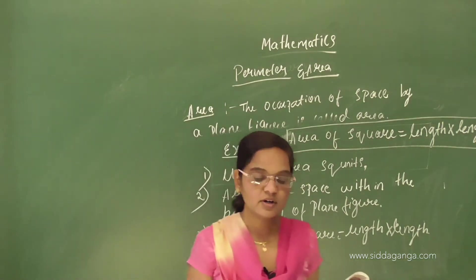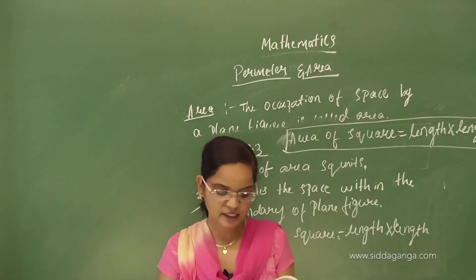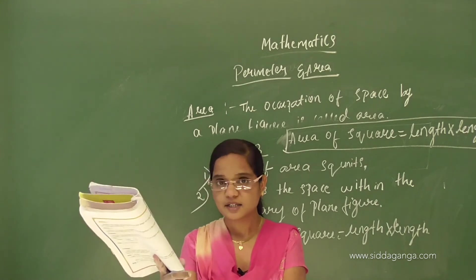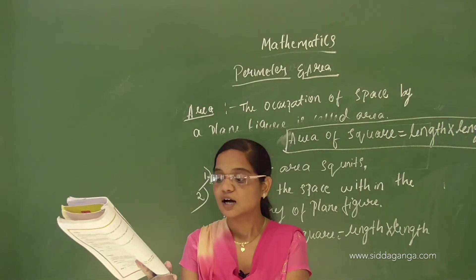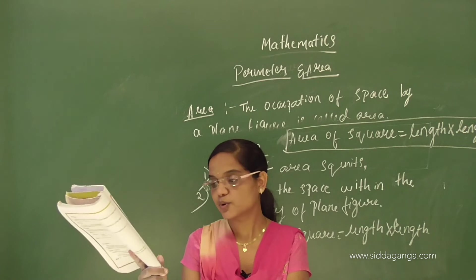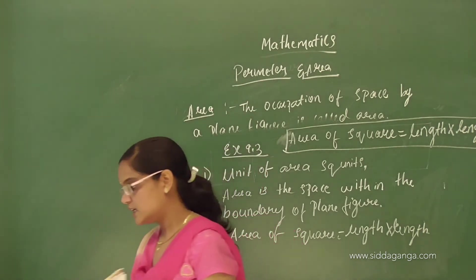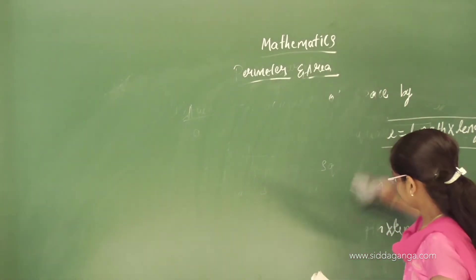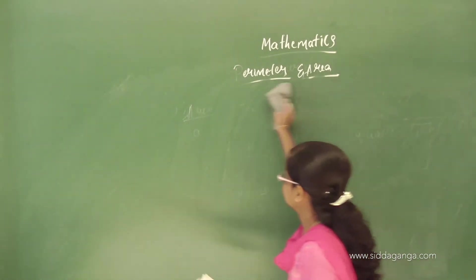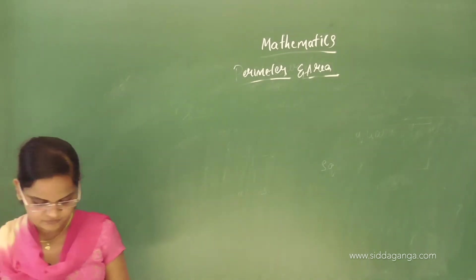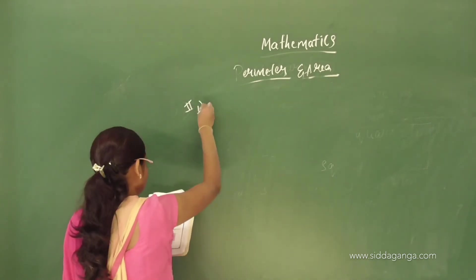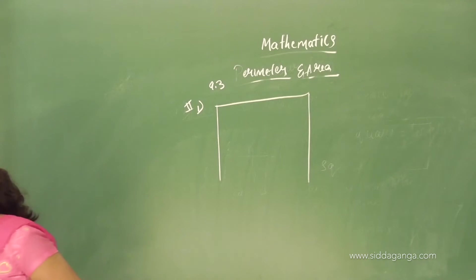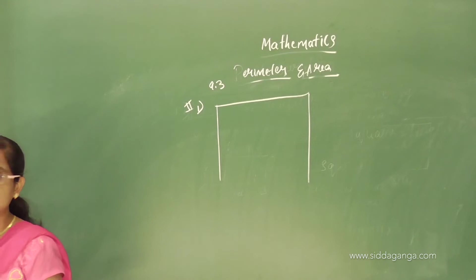The rectangles given below are divided into squares of unit length — find their areas. The rectangles are divided into squares of unit length. We need to find the length and breadth by counting squares, then calculate the area. Let's start with Exercise 9.3, first question.